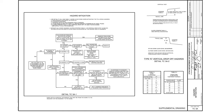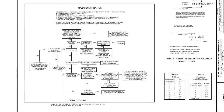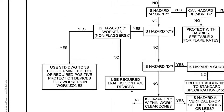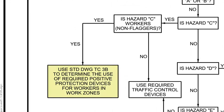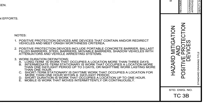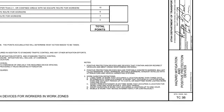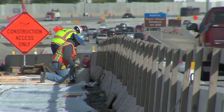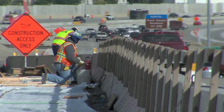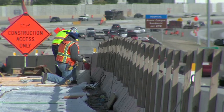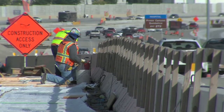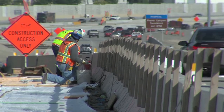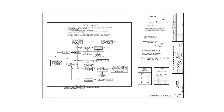Standard Drawing TC3A directs the user to the new decision sheet TC3B for positive protection. Standard Drawing TC3B has been developed to address federal regulations regarding the protection of workers within a work zone. This drawing will come into play when you determine that you have a Type C hazard — workers or non-flaggers — as shown on TC3A. Let's take a look at TC3A.